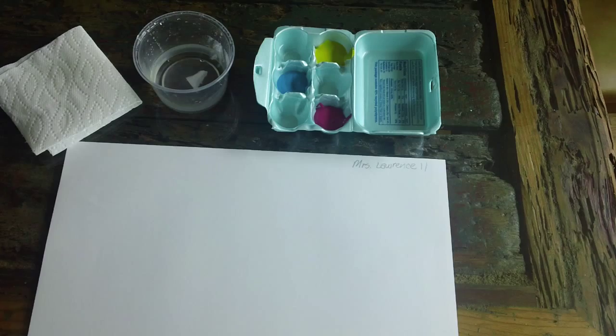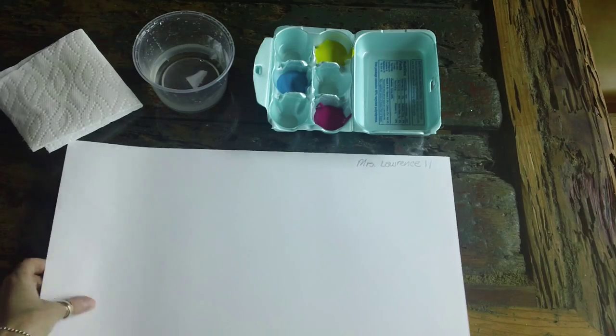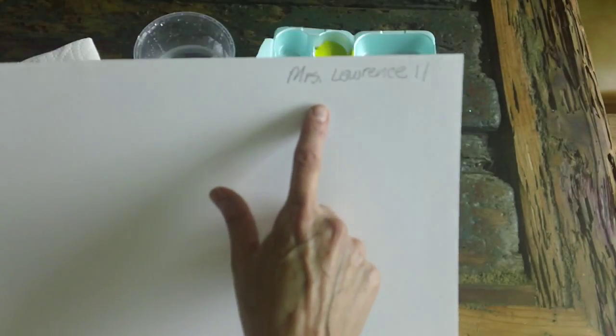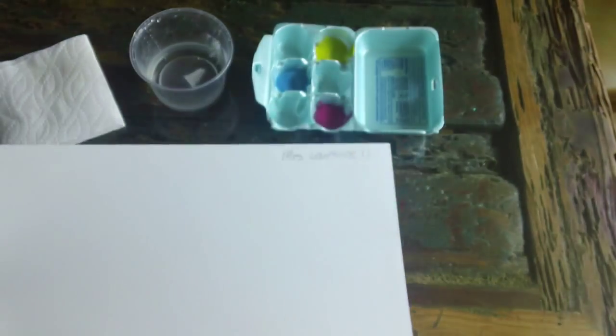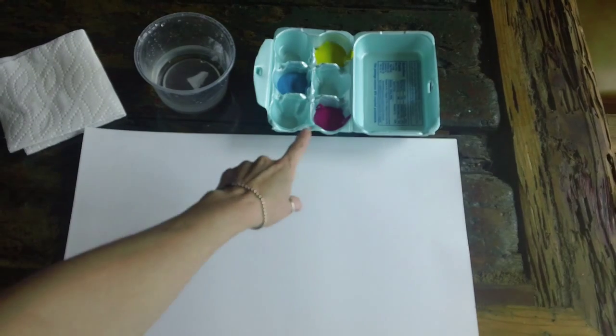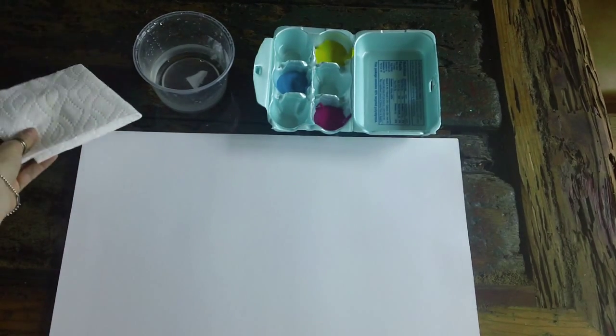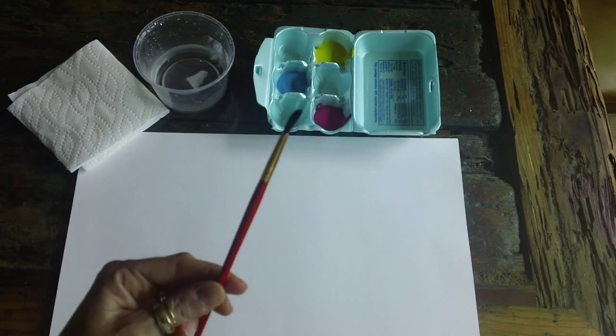Here are the supplies we're going to use today. First of all, our paper, and you need to label that with your name and room number, and then turn it over. We have our paints, a tub of water, a piece of toweling, and of course our paintbrush.